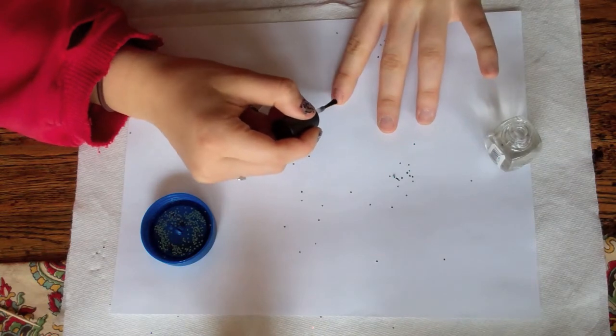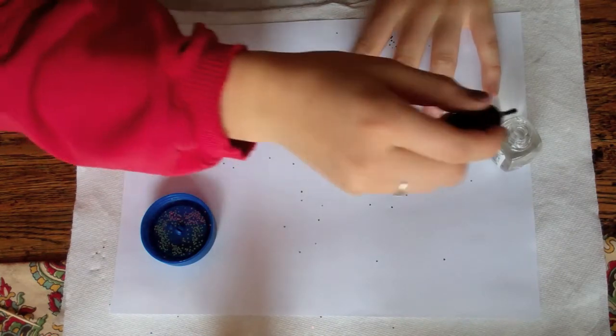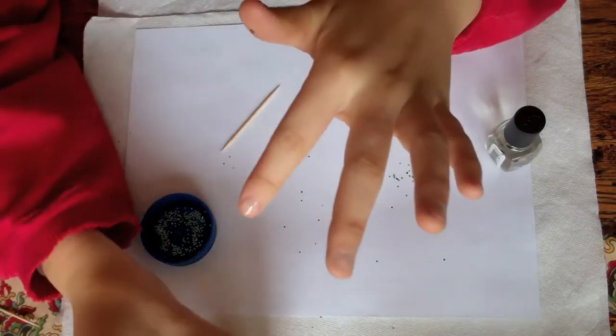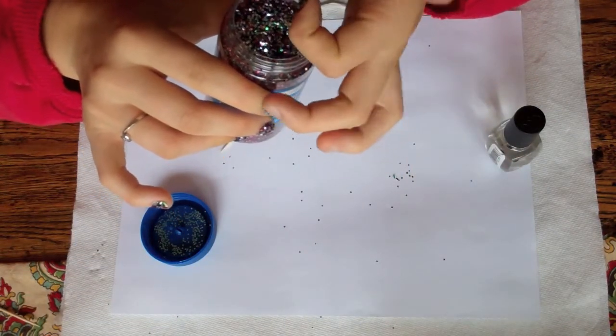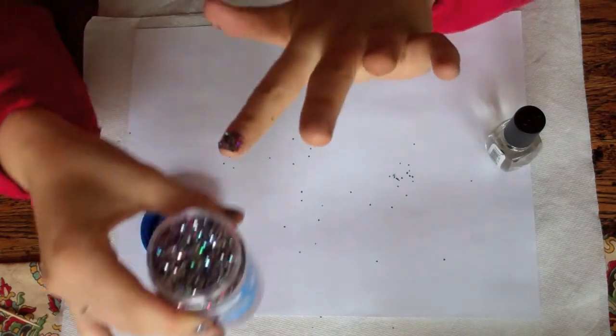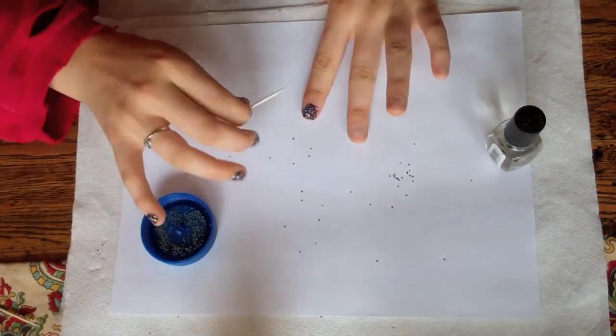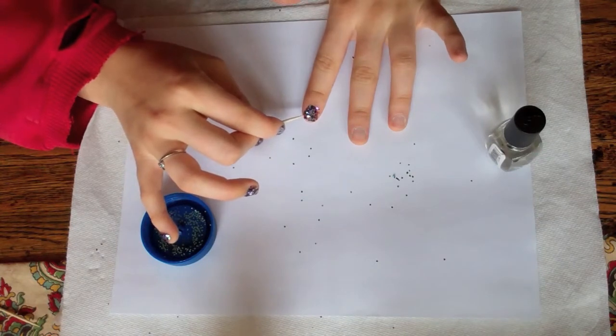You're just going to repeat the step for the rest of your nails, making sure that as you go along you are lightly pressing down the glitter to really stick to the clear nail polish, so they don't move around when you're doing your second coat.